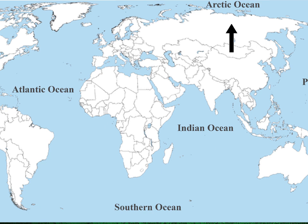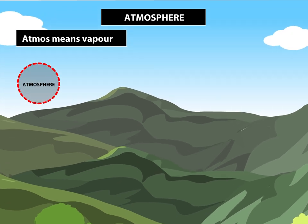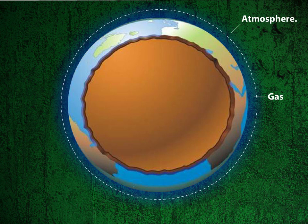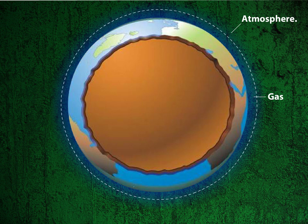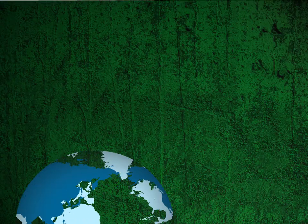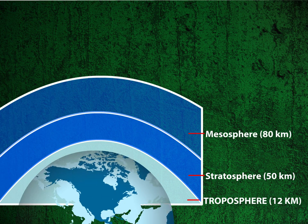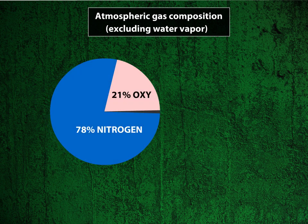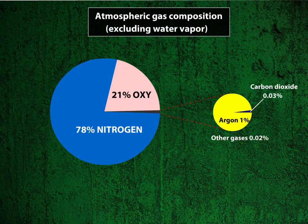The Indian Ocean and the Arctic Ocean. The third main domain of Earth is the Atmosphere. Atmos means vapour. The Earth is surrounded by a layer of gas called the Atmosphere. It provides us with the air we breathe and protects us from the harmful effects of sun's rays. The Atmosphere is divided into five layers: Troposphere, Stratosphere, Mesosphere, Thermosphere and Exosphere. The Atmosphere contains 78% Nitrogen, 21% Oxygen and 1% other gases.